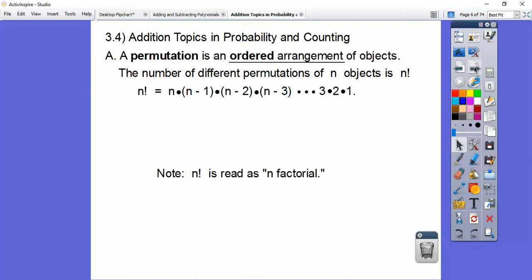N with the exclamation is read n factorial. So there's special cases. Zero factorial is one, but there's other values of n factorial. Also, one factorial equals one. Those are special cases right there.